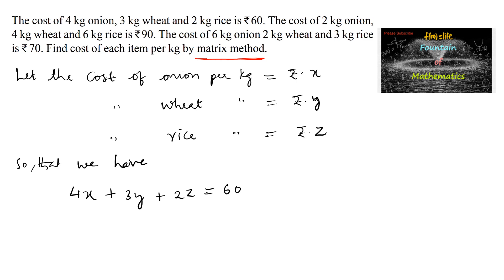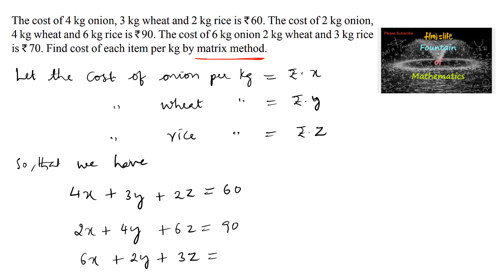The cost of 2 kg onion is 2x, 4 kg wheat is 4y, and 6 kg rice is 6z, which equals Rs. 90. The next equation: cost of 6 kg onion is 6x, 2 kg wheat is 2y, and 3 kg rice is 3z, which equals Rs. 70. So we have all three equations.